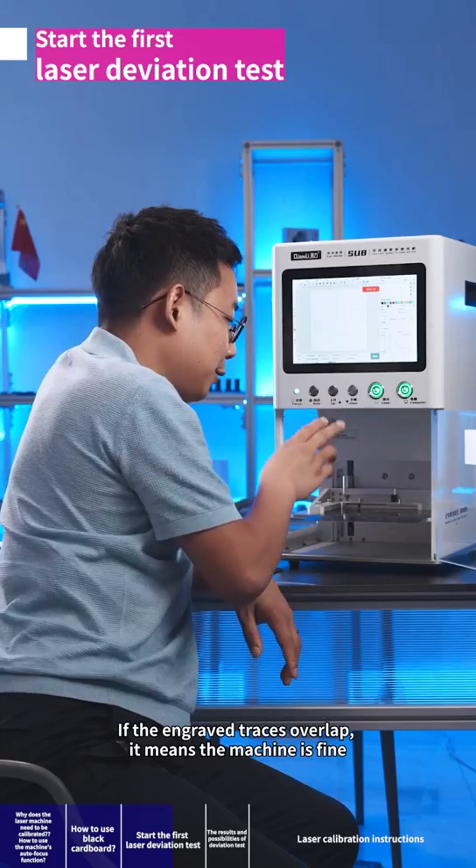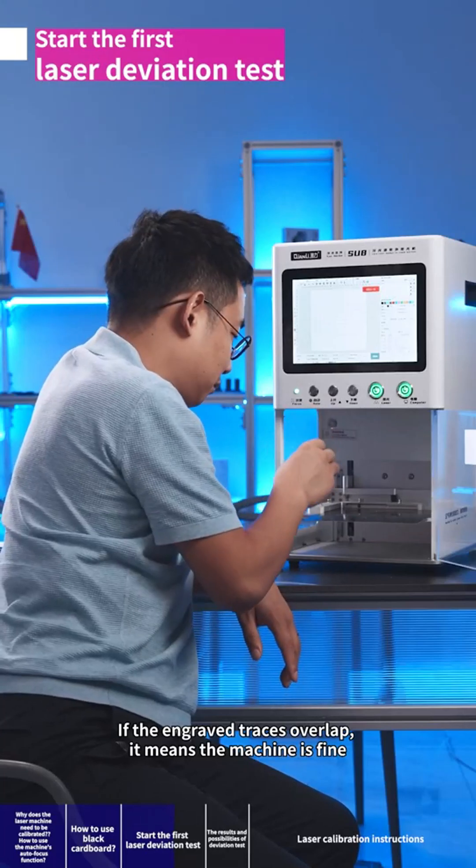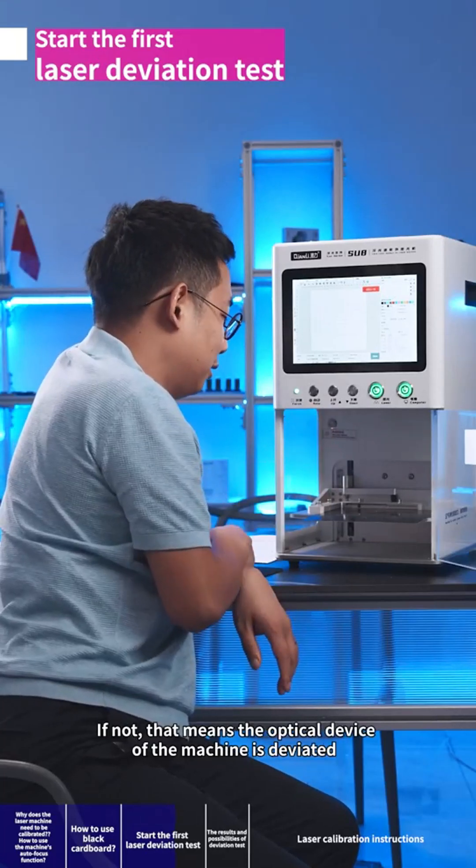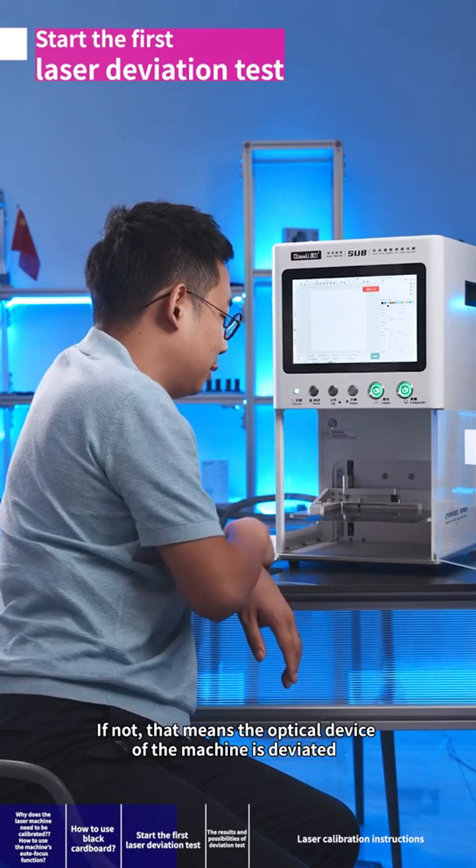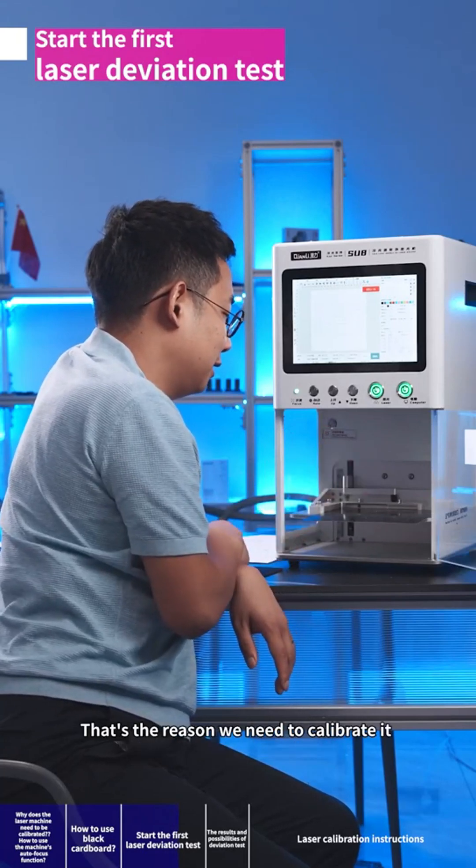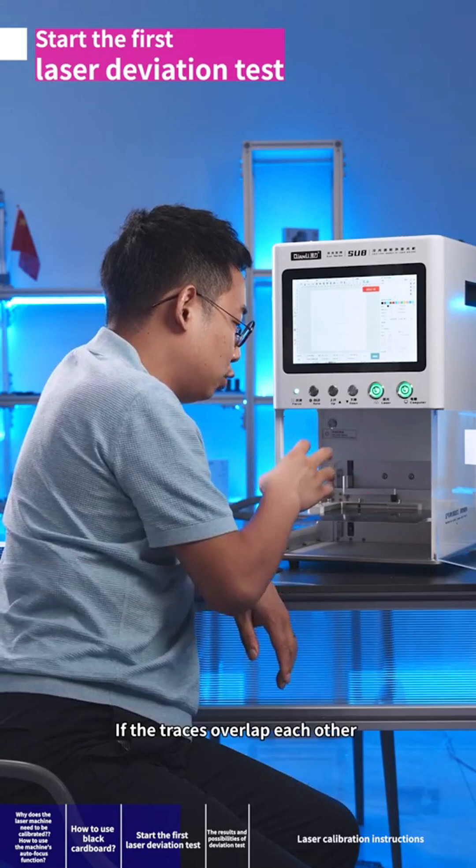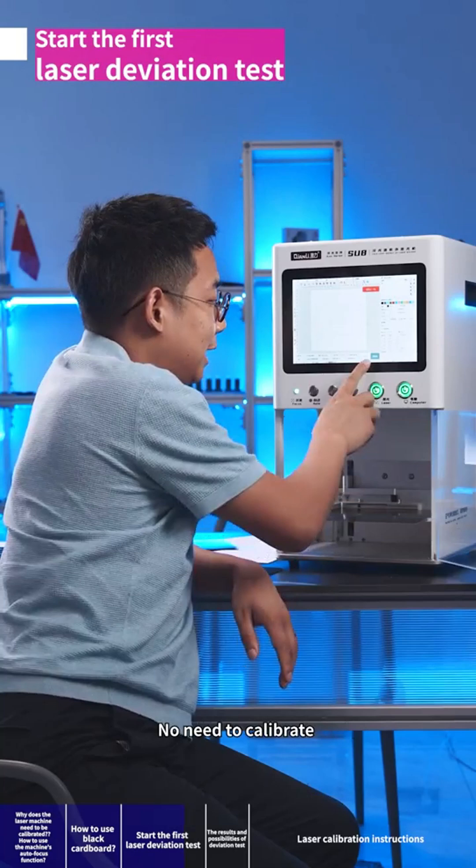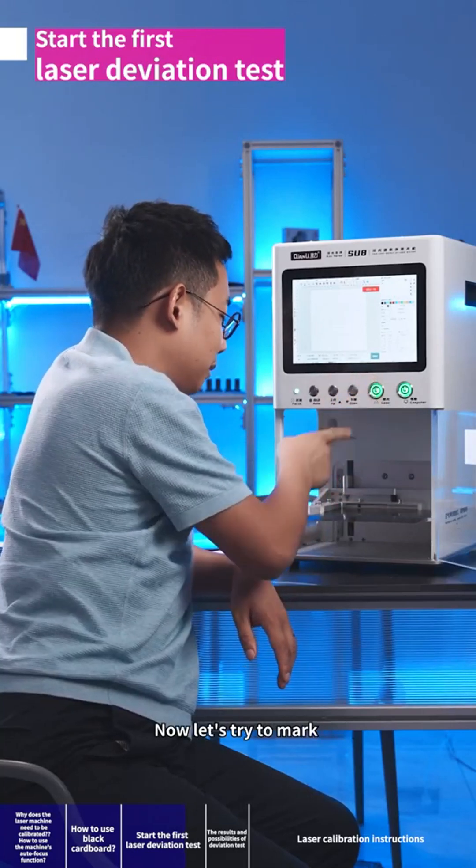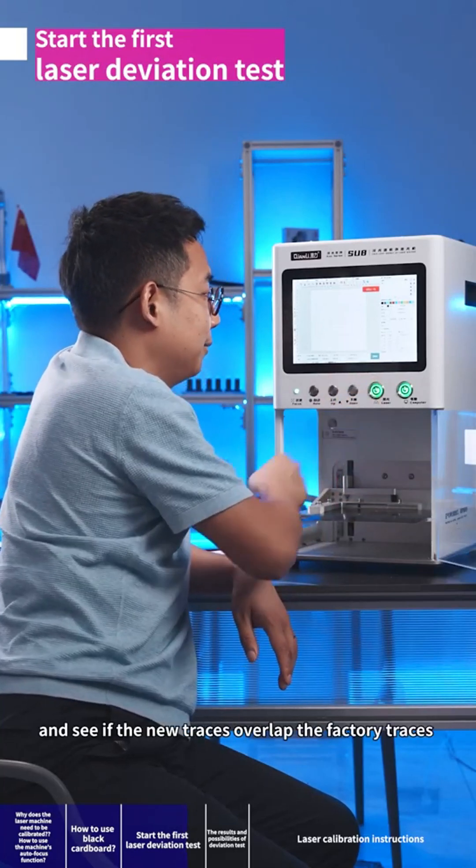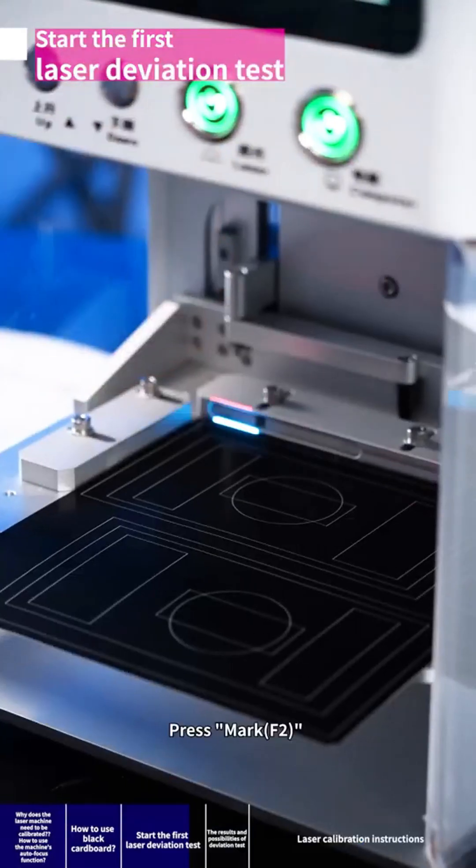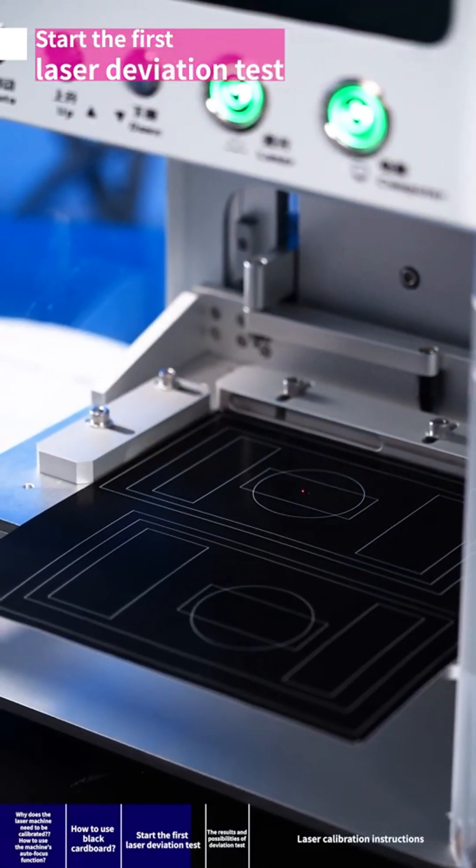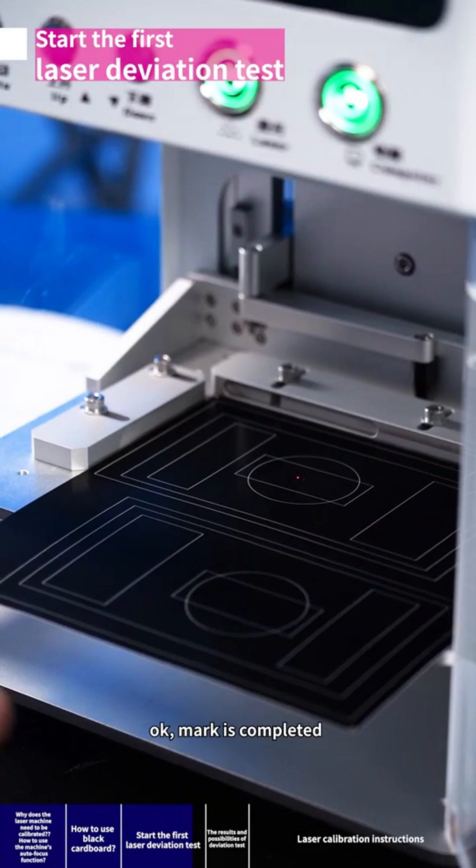If the engraved traces overlap, it means the machine is fine. If not, that means the optical device of the machine is deviated. That's the reason we need to calibrate it. If the traces overlap each other, we can use the machine directly. No need to calibrate. Now let's try to mark and see if the new traces overlap the factory traces. Press mark F2. Mark is completed.